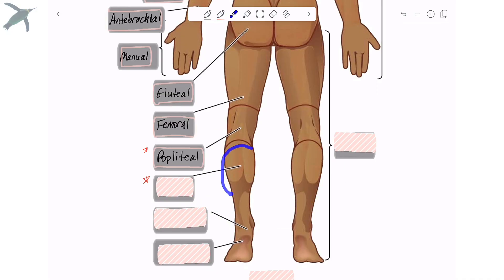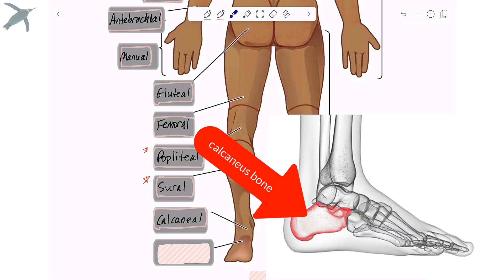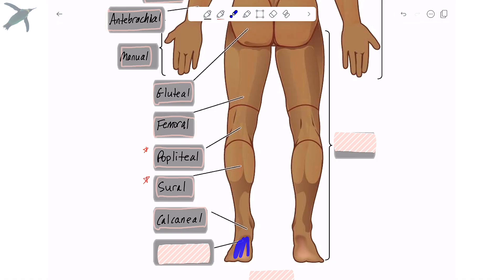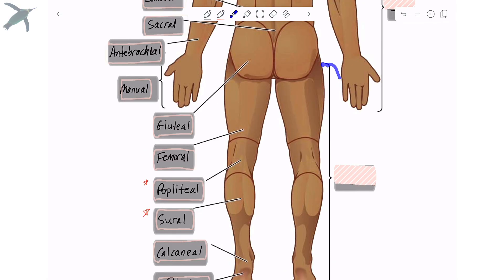This region, which most people call the calf, is the sural region. Sural is just Latin for calf. The heel of the foot is the calcaneal region, named for the bone, the calcaneus bone, which is the heel of the foot. The bottom of the foot is referred to as the plantar region.